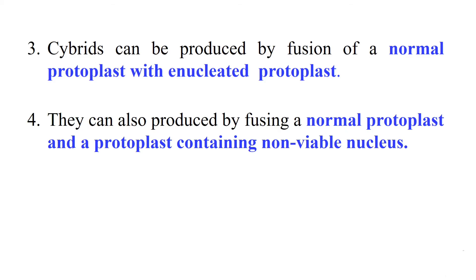The next method of producing cybrids is the fusion of a normal protoplast with an enucleated protoplast — meaning we remove the nucleus of one of the cells. Since the nucleus is not there in the enucleated cell, after fusion it will form only cybrids. To remove the nucleus, we centrifuge our cells at high speed, around 20,000 to 40,000 rpm for 45 to 90 minutes. We can also give exposure to cytochalasin B in combination with centrifugation for complete enucleation.